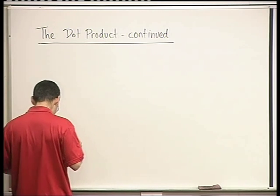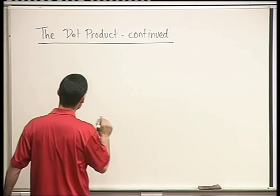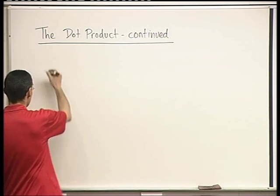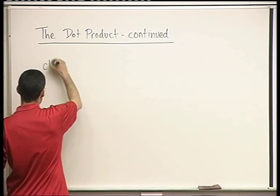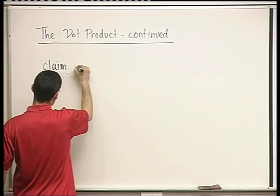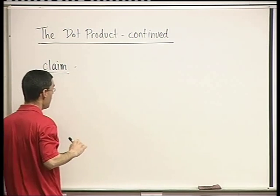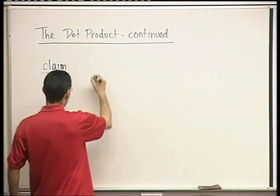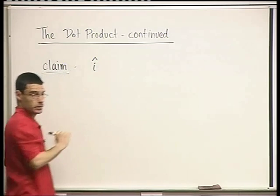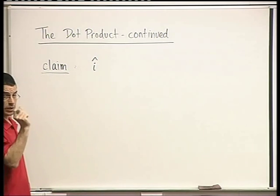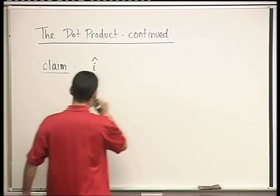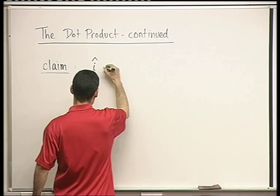First of all, we're going to need a little easy auxiliary claim. The claim involves these unit vectors — the unit vectors in the direction of the axes.